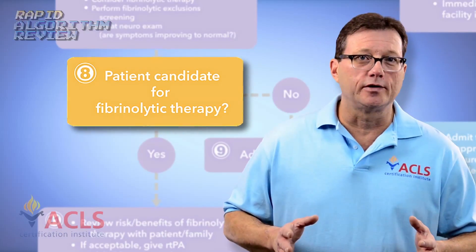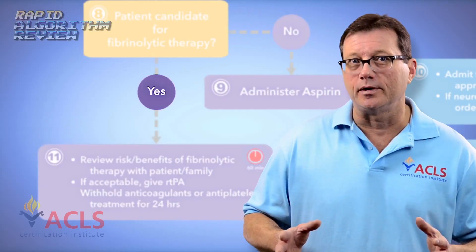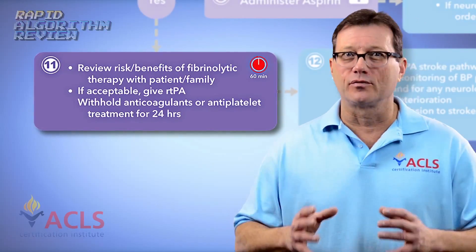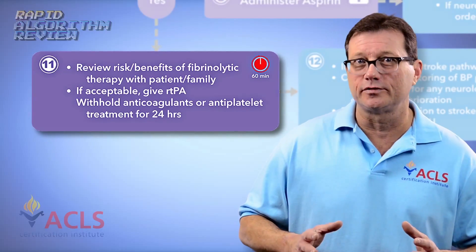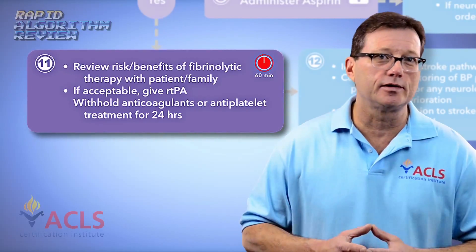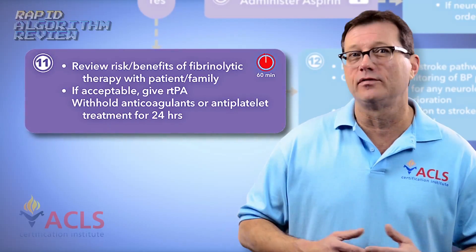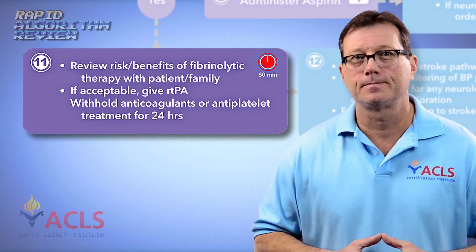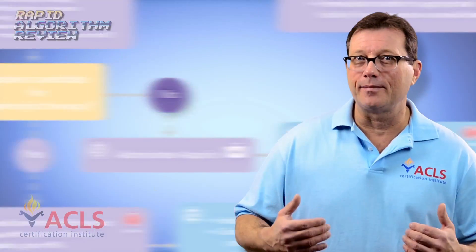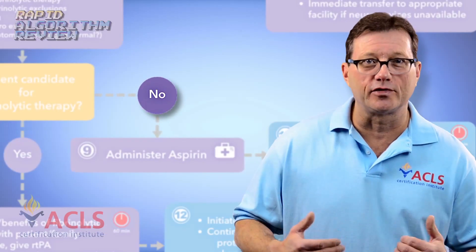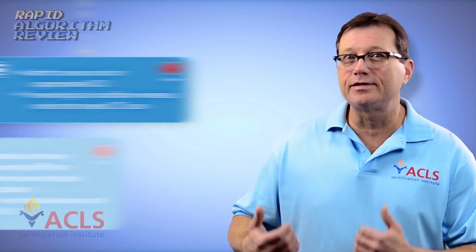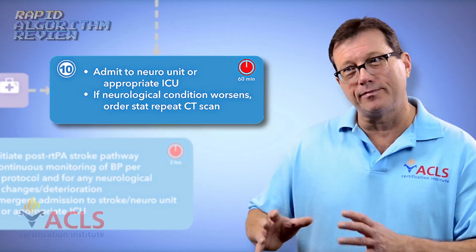If the patient meets the criteria to receive fibrinolytic therapy, administer it as quickly as possible, review the risks and possible hazards with the patient, and suggest no anticoagulant therapy for 24 hours after administering the fibrinolytic. If the patient is having an ischemic event but does not meet the criteria for fibrinolytic therapy, the algorithm suggests we can still administer aspirin and admit them to the proper unit for evaluation by a neuro team.